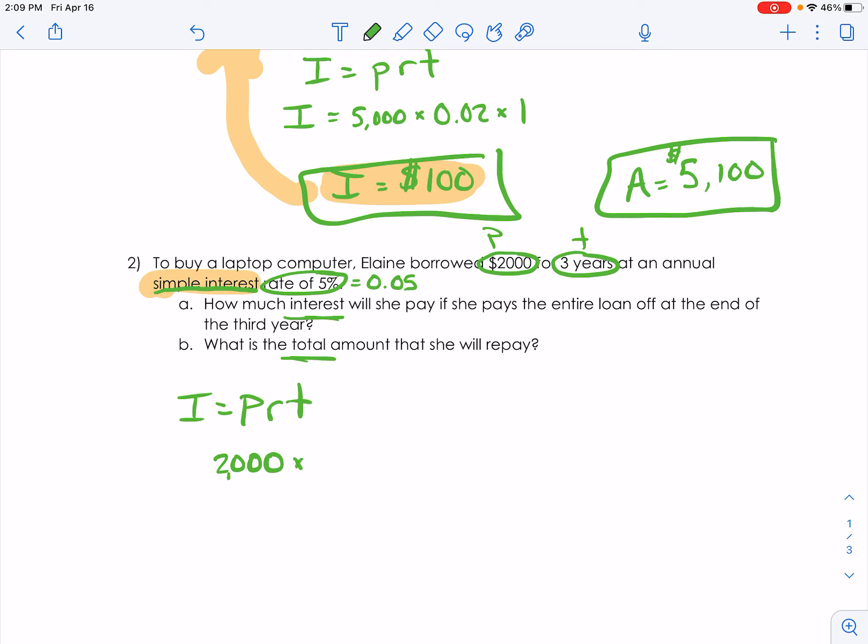So $2,000 times the rate, 0.05, times the years, 3. So $2,000 times 0.05 was our 100, and times 3 is going to be $300. So the interest that we have to pay after three years is $300. So that's answer A.